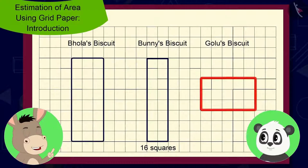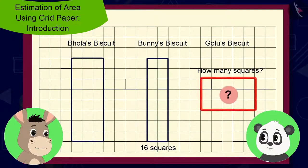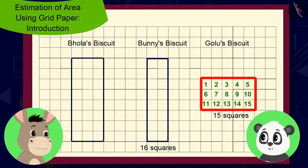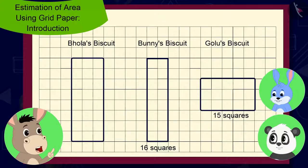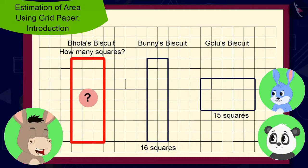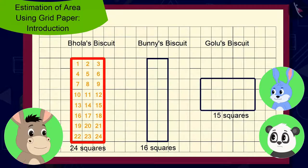'And Golu, tell me how many squares are there in the shape of your biscuit?' Bhoola asked. 'Hmm, fifteen squares,' said Golu. 'And can you both tell me how many squares are in the shape of my biscuit?' Bhoola asked Bunni and Golu. 'Twenty-four squares?' said Bunni and Golu, shocked.